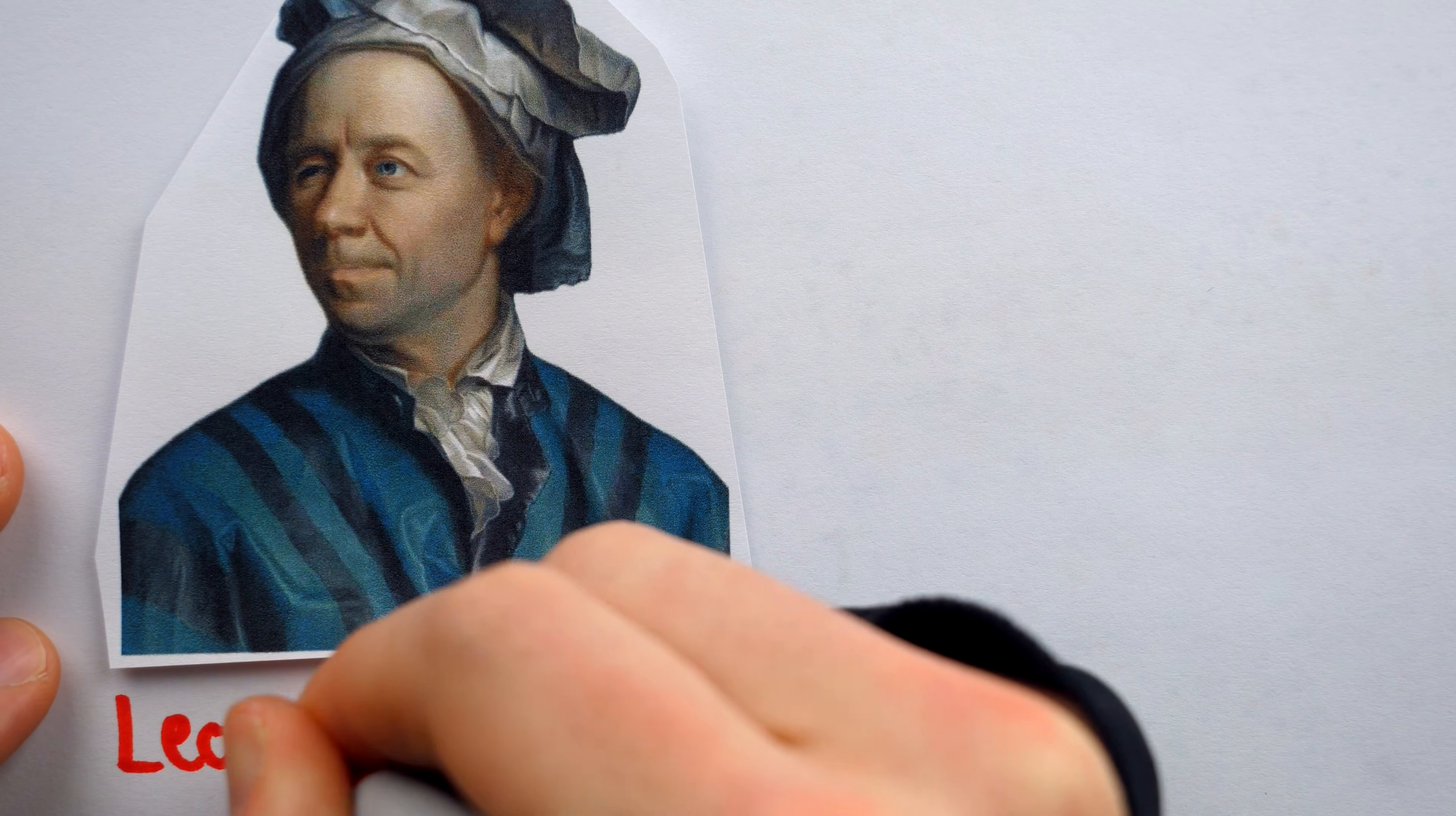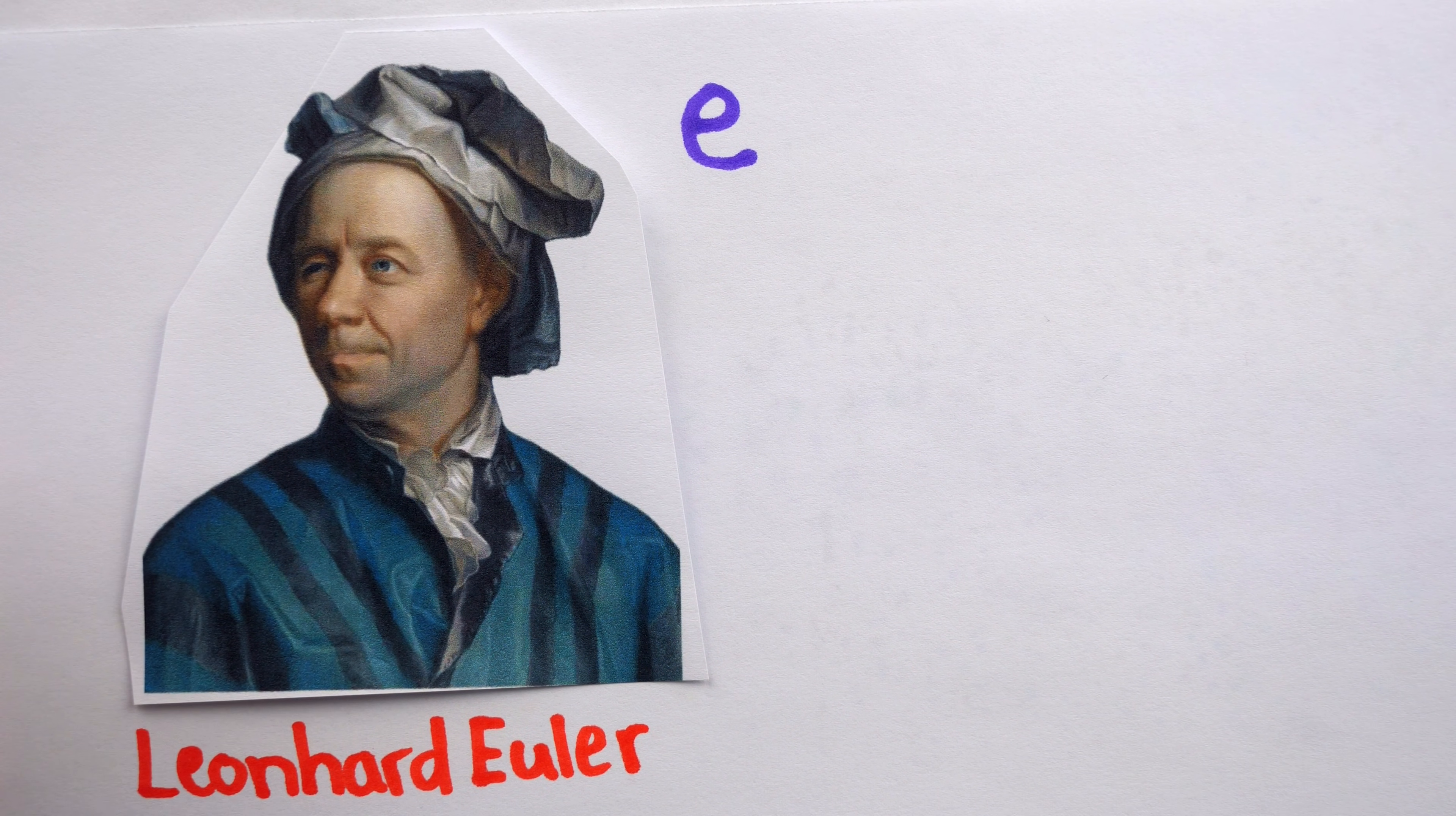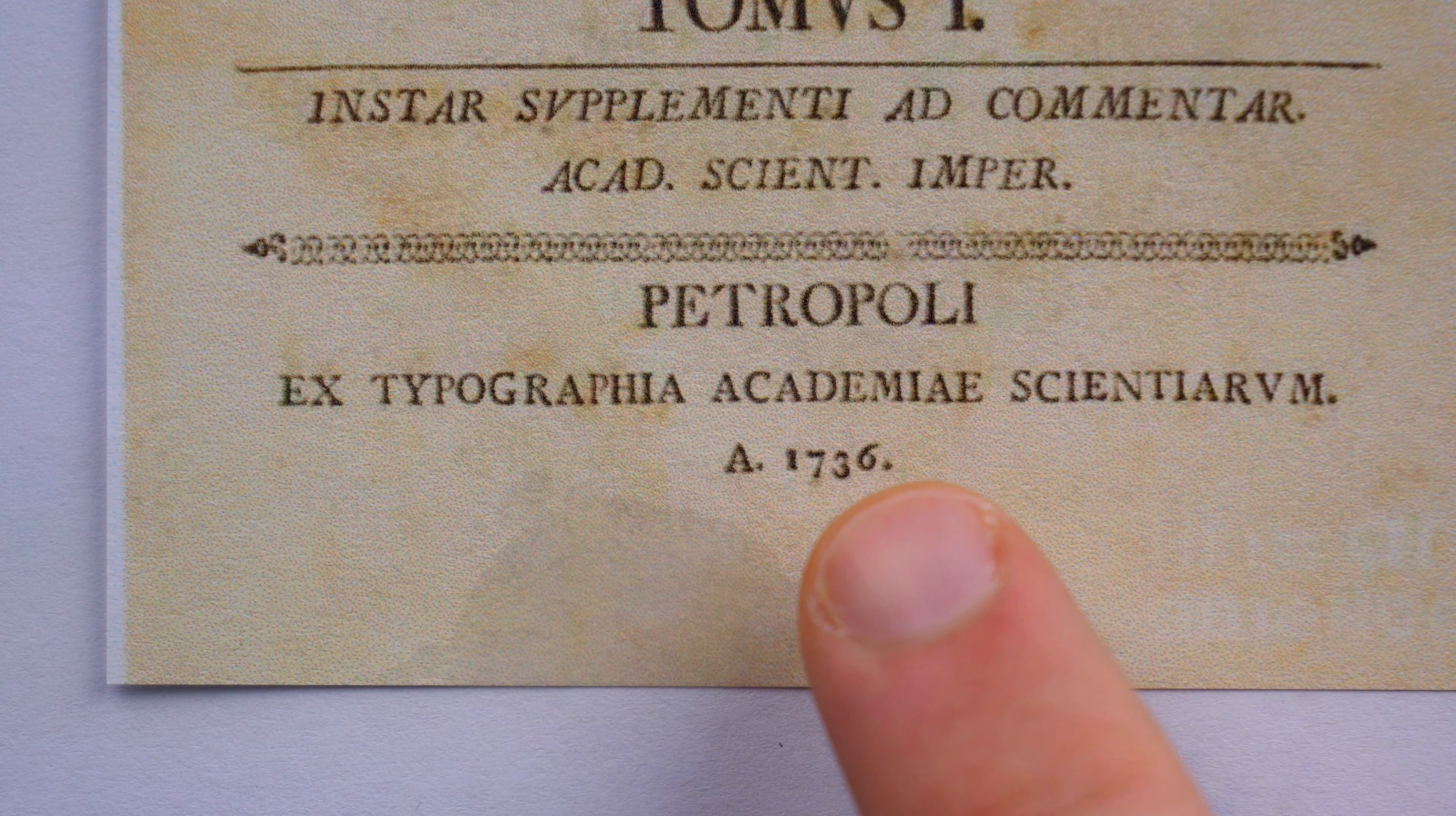Finally, the man of the hour, Leonard Euler, truly enters the stage. Indeed, it is Euler himself to whom we owe credit for this notation. He used e to refer to the base of the natural logarithm in Volume 1 of Mechanica, a work published in 1736 describing the mathematics of movement.